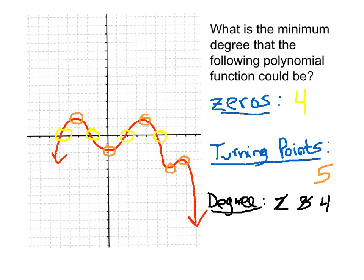Could it be degree 4? Looking at the zeros, we could say yes — a degree-4 polynomial can have up to four zeros. But the maximum number of turning points a degree-4 polynomial can have is 4 minus 1, which is 3. This polynomial function has five turning points, so it cannot be degree 4.